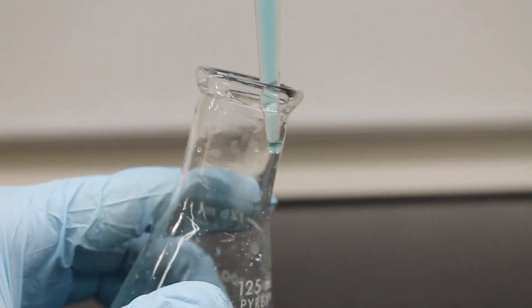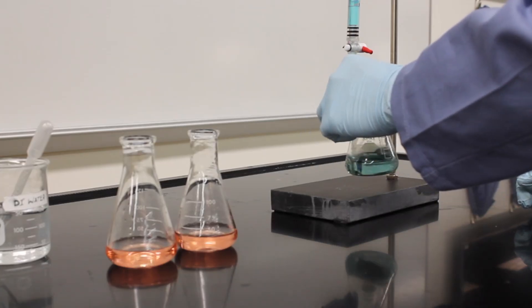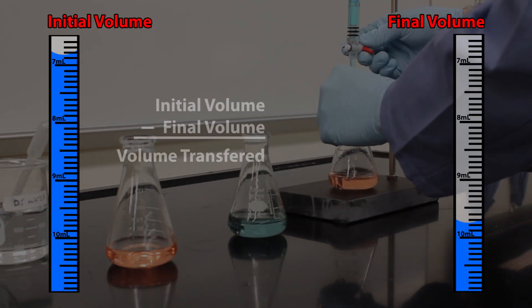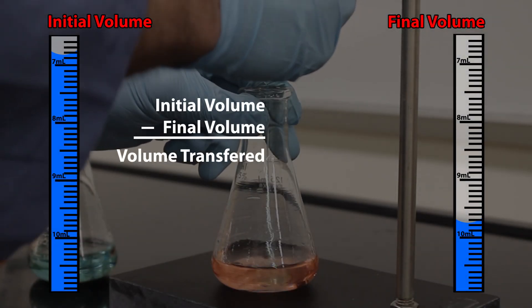Once you have your desired volume make sure to touch the tip of the burette to the side of the transfer container to transfer the last bit of liquid. If you didn't start at zero make sure you take your final volume minus your initial volume for the amount transferred.